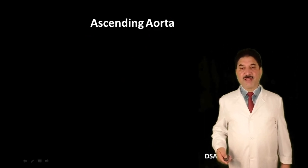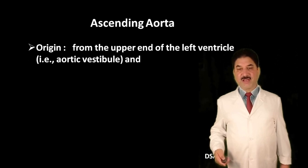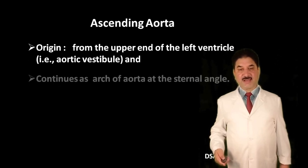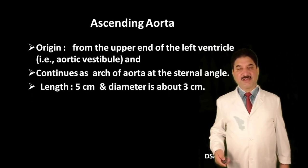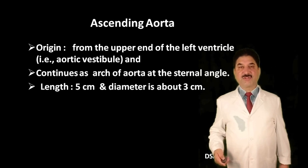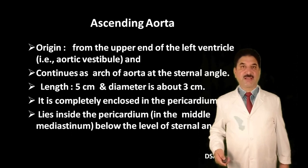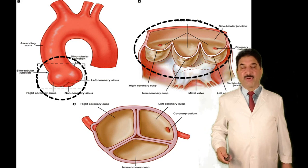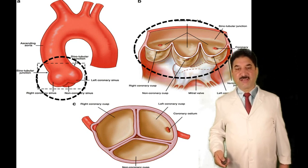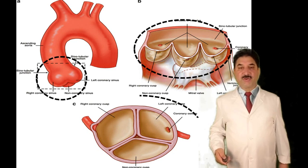Ascending aorta originates from the upper end of the left ventricle, that is the aortic vestibule, and continues as the arch of the aorta at the sternal angle. Length of the ascending aorta is five centimeters and its diameter at the beginning is three centimeters. It is completely enclosed in the pericardium, lying in the middle mediastinum below the level of the sternal angle. If we open the aorta, there are three aortic sinuses: two of them are coronary — giving origin to the coronary arteries — and one is non-coronary, which does not give origin to any coronary artery.